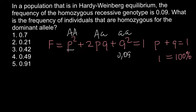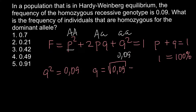This is very easy. As long as we know Q squared, and Q squared equals 0.09, in order to find Q we just take the square root from both sides. So Q would equal the square root of 0.09, and the answer is Q equals 0.3.